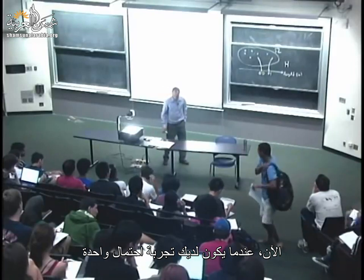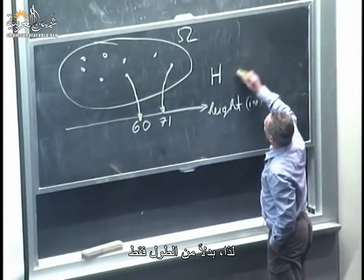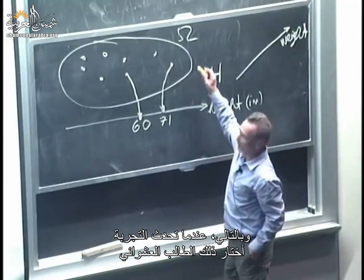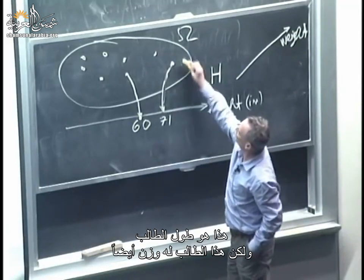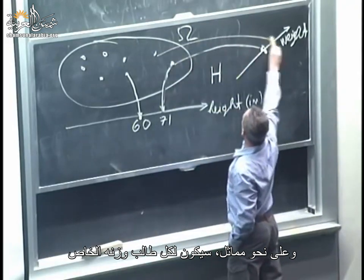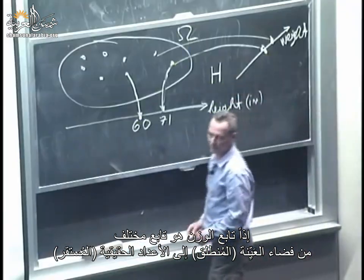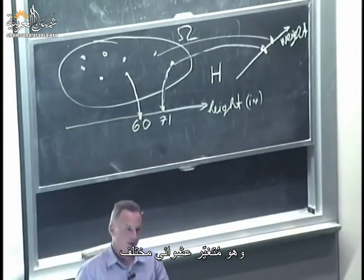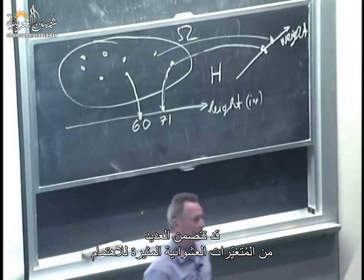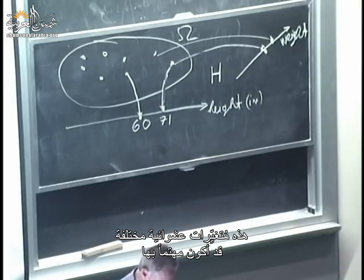When you have a single probability experiment, you can have multiple random variables. Perhaps instead of just height, I'm also interested in the weight of a typical student. When the experiment happens, I pick a random student — the student has both a height and a weight. The weight function is a different function from the sample space to the real numbers, and it's a different random variable.